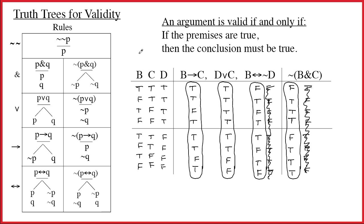This video will illustrate the technique of using a truth tree to determine if an argument is valid or invalid. Before we look at the tree method, let's take a look at something you're probably familiar with: a truth table.